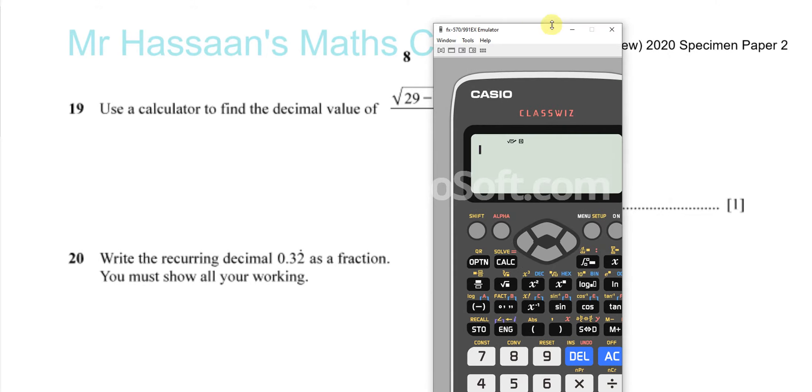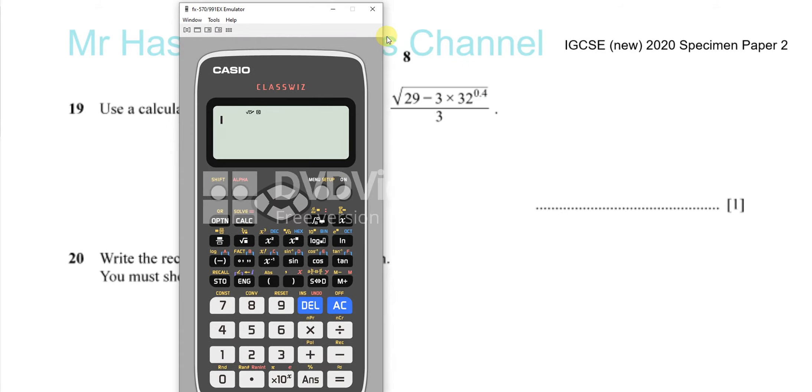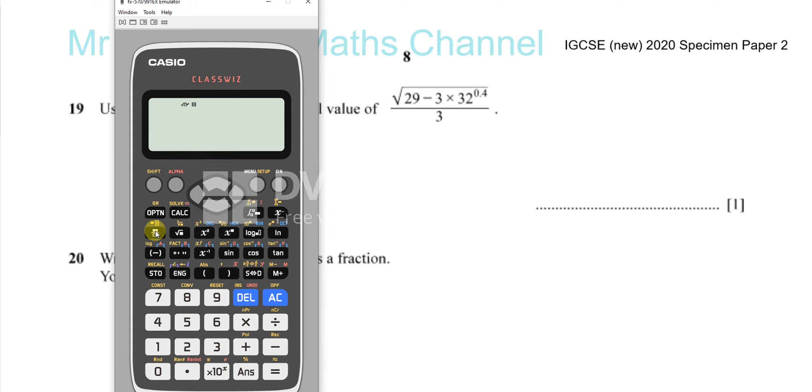You just take your calculator and what I would do is put the fraction first, then the square root, then 29 minus 3 times 32 to the power of—you use this button here to the power of 0.4.